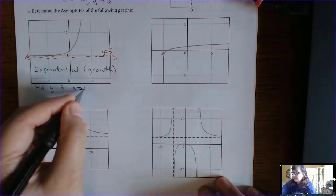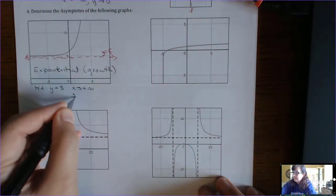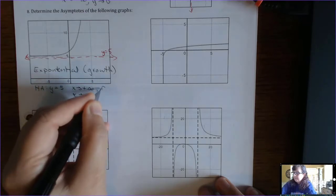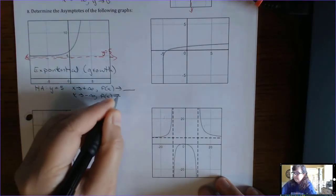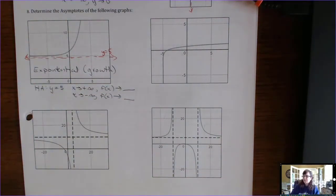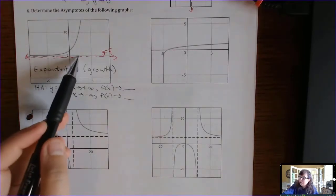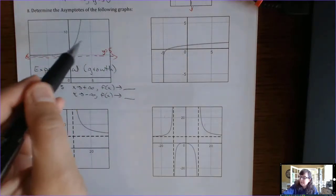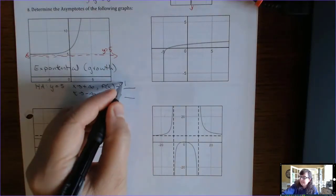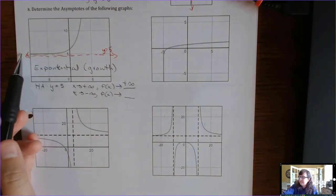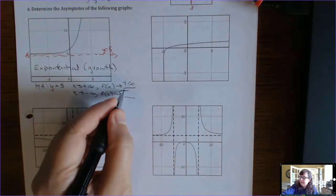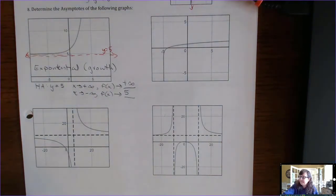This has to do with end behavior. As x goes to the right toward positive infinity, y is going up. And as x goes to the left toward negative infinity, y is leveling off at the number 5.